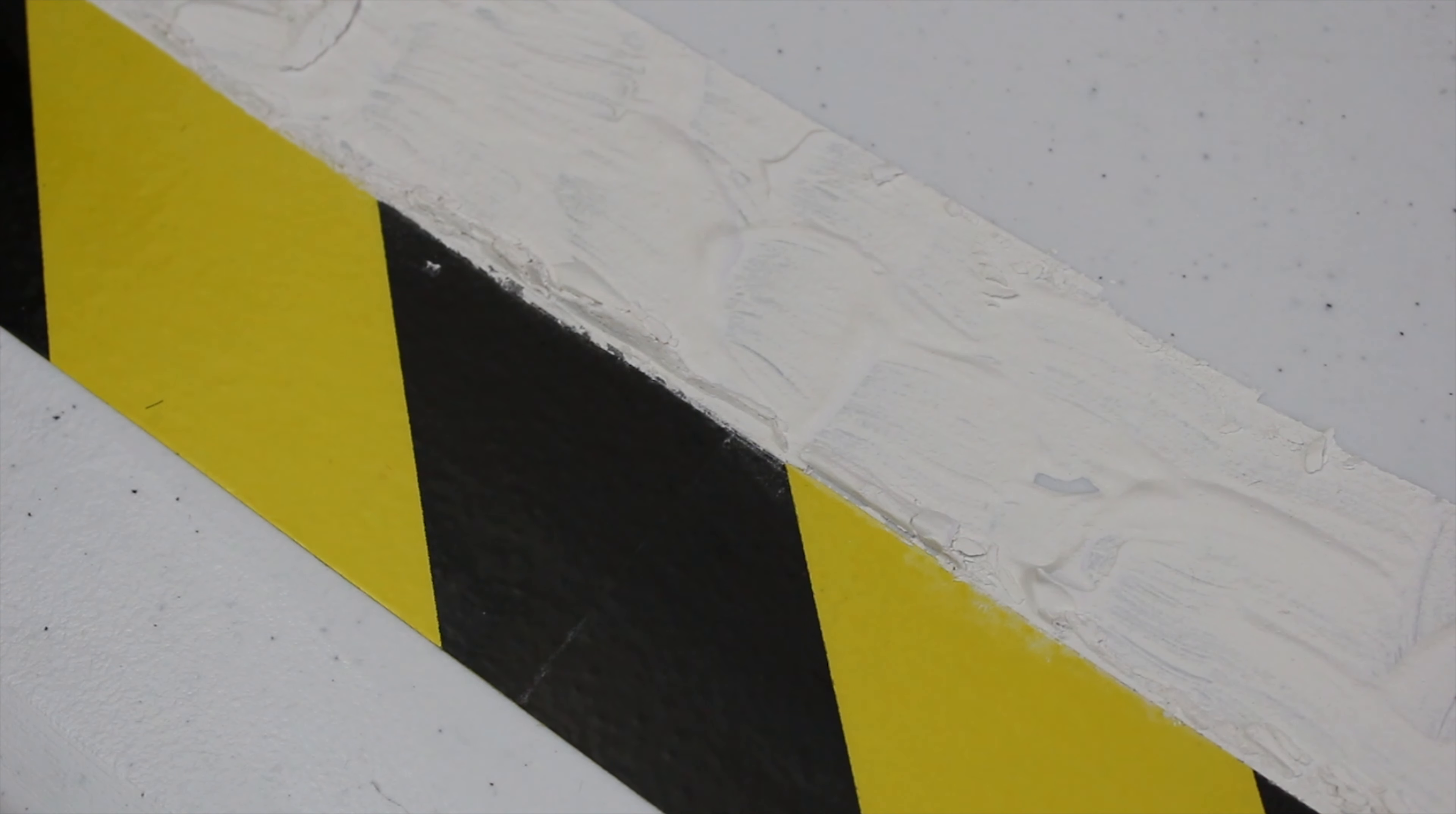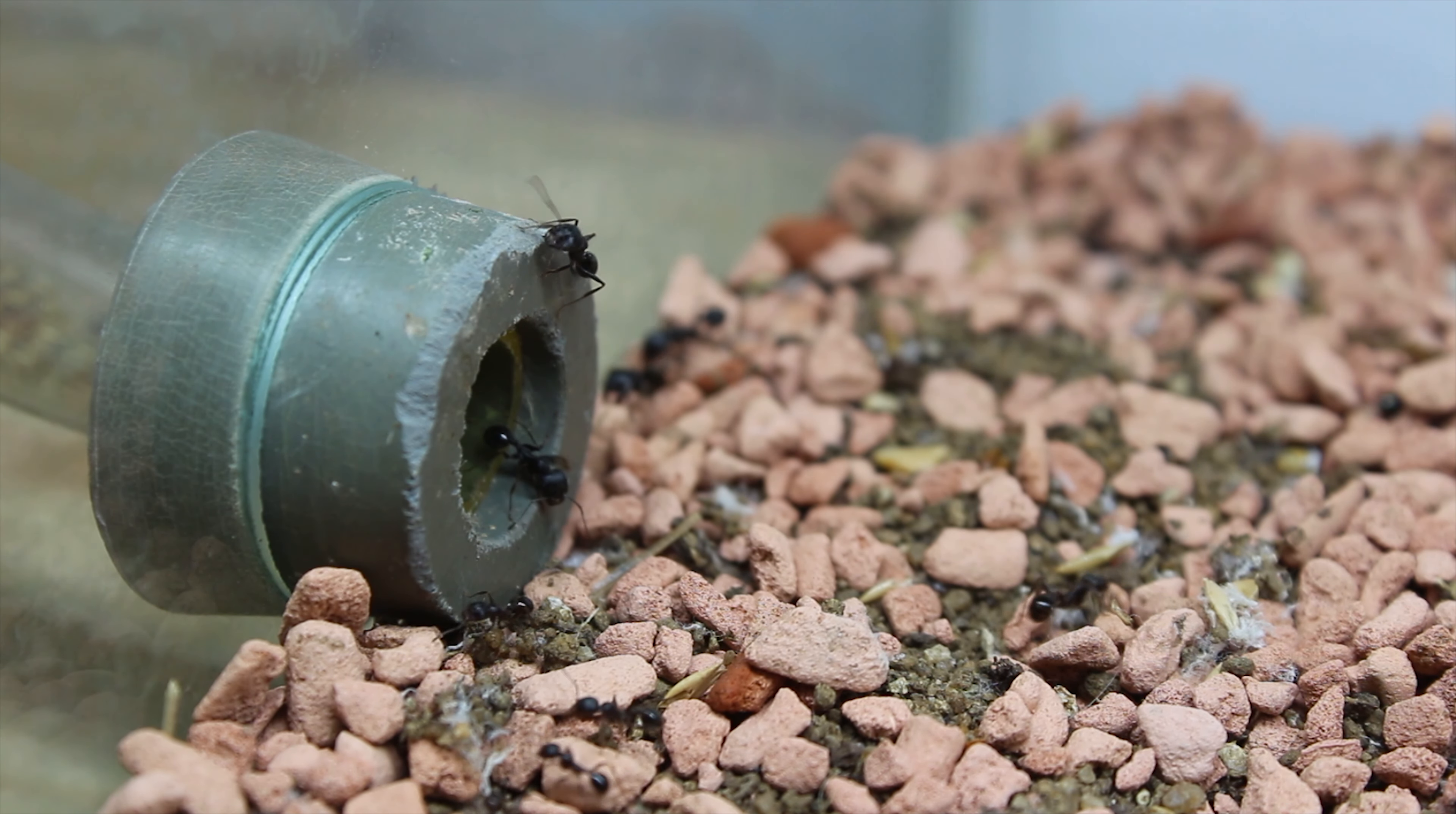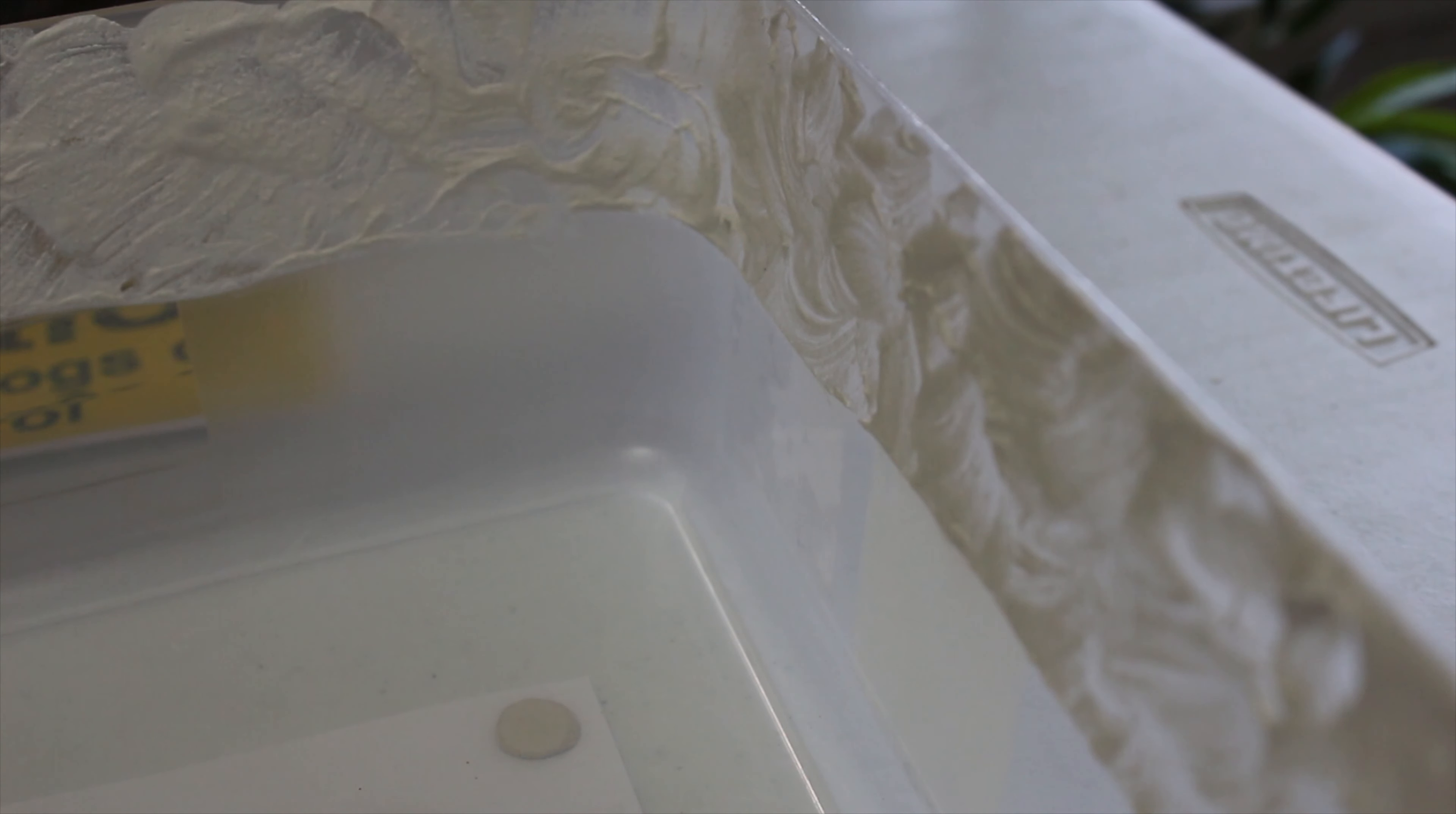Obviously ants will pour out of this box uncontrollably, so I have taken some anti-escape measures. Inside the ring of the containment zone, we have a thick coating of anti-ant formula. This is basically a mixture of baby powder and a liquid with a strong alcohol content. These ants can't walk on it when it is pasted onto a vertical surface, so I guess we will just have to see how it does on a horizontal surface.